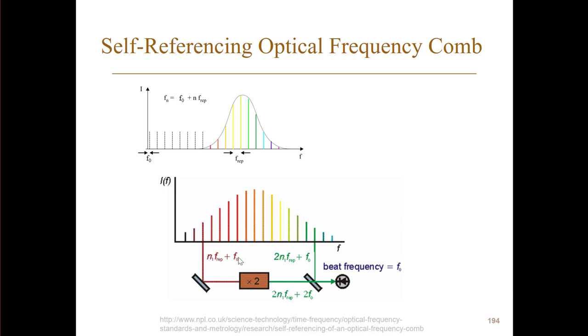And then we send this through a crystal and do frequency doubling, which we talked extensively about. Then what comes out is of course twice of this here, so now we have two times n1 times f-rep plus two times f-zero.